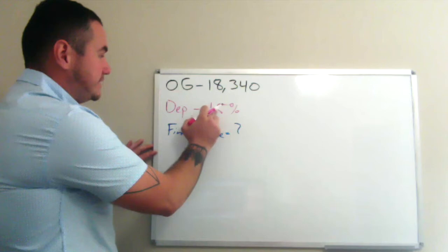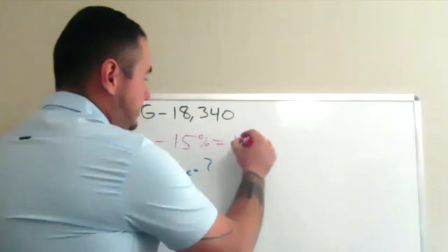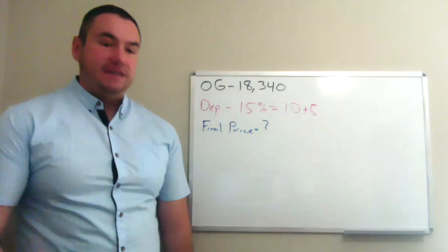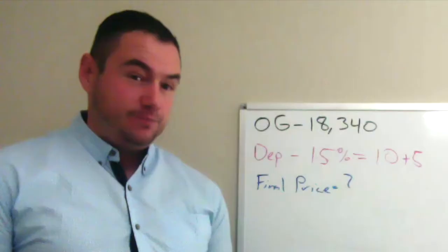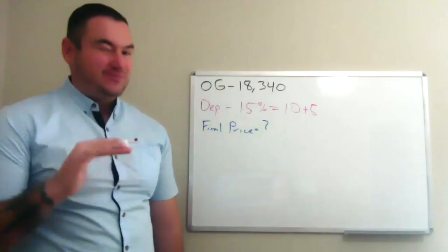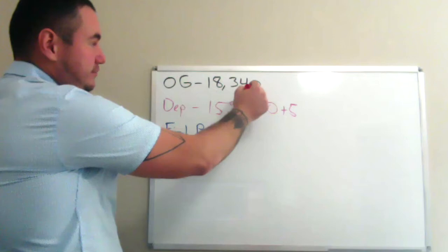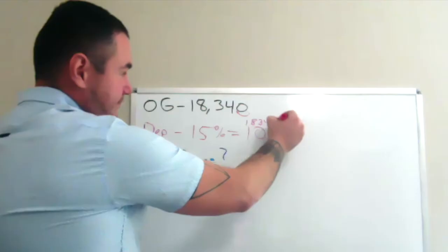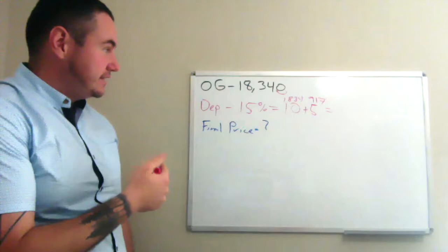The reason for that is 15% is equal to 10% plus 5%. 10% is one of the easiest ones to find, and then 5% is just going to be half of that. Half of 10% is 5%. It should be fairly simple. 10%, we just put a decimal one time over, so it becomes 1834, and then 5% is going to be half of that. So we'll say 917, and that'll give you the 15%. Then you just add those together, subtract it, and then you get your final price.